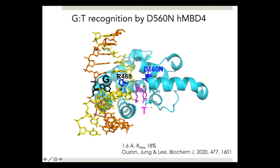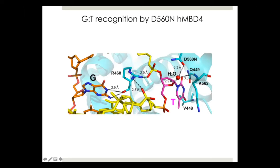So we sought a higher resolution structure. We used a GT mismatch with an aspartate-to-asparagine mutant. In this structure, thymine is flipped out, guanine is intra-helical, and the arginine finger is present. The arginine finger approaches from the minor groove, disrupts the guanine-thymine base pair, and thymine enters the active site. Guanine is engaged in hydrogen bonds with the arginine finger.